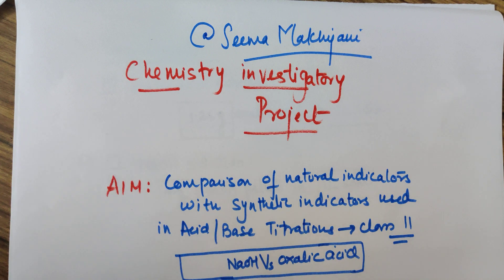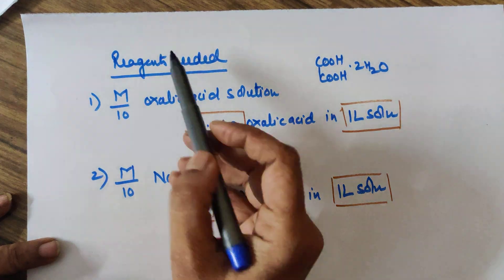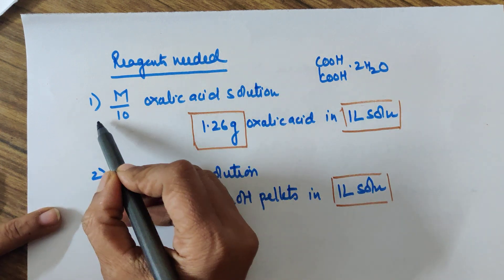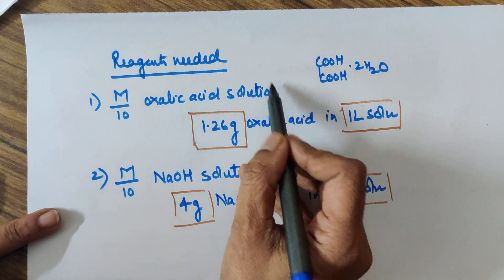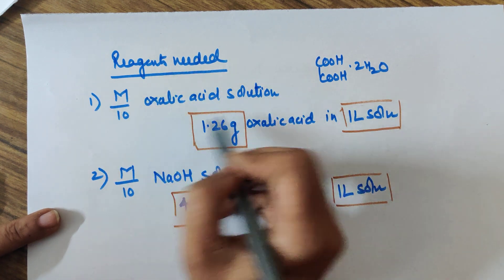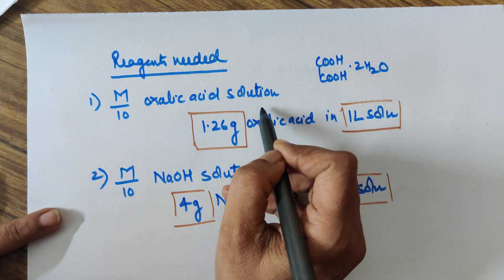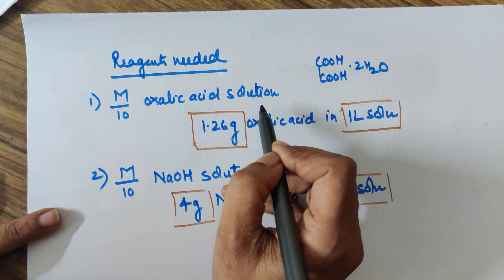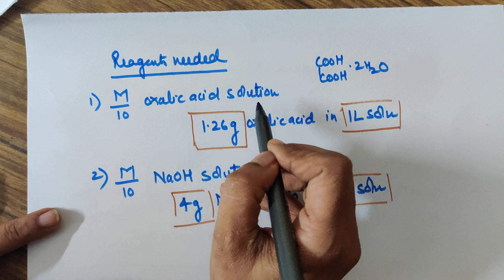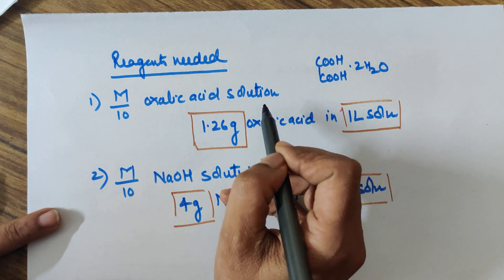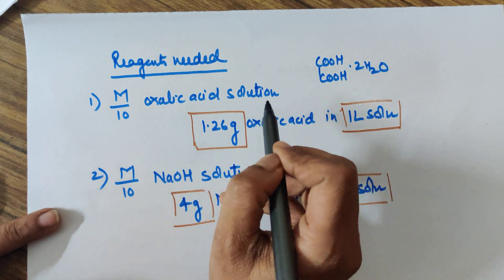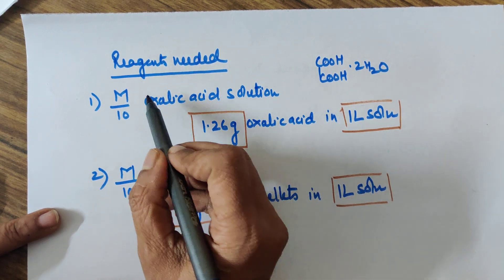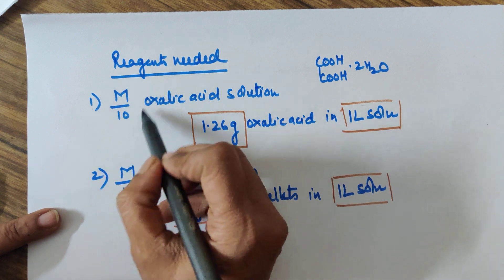So let's move ahead. What are the reagents that you require for this particular project? The first reagent required is M by 10 oxalic acid solution. This you must have done in Class 12th. If this doesn't come through, then please again go back to the channel, watch for the titration redox titration. You will find a video on standard solution of oxalic acid, how to prepare it.